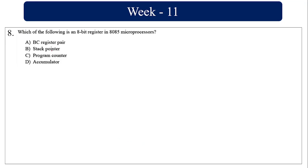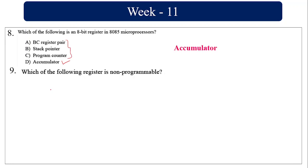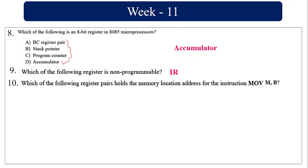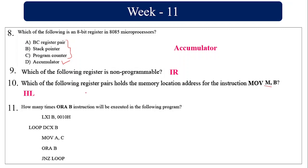The accumulator is an 8-bit register; all other options are 16-bit registers. The interrupt register is a non-programmable internal register. The HL register pair holds the memory location address — M refers to the HL register pair.